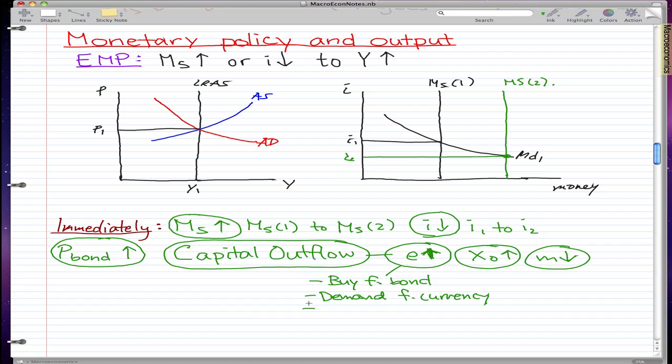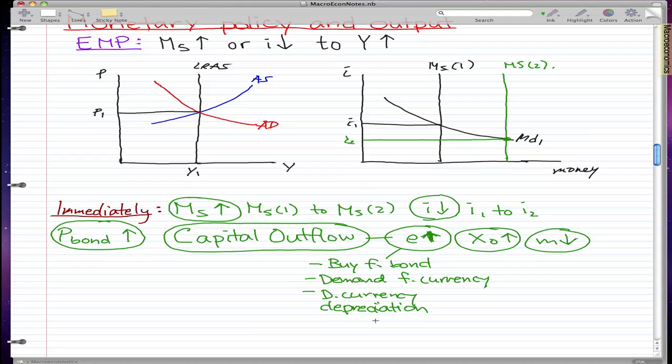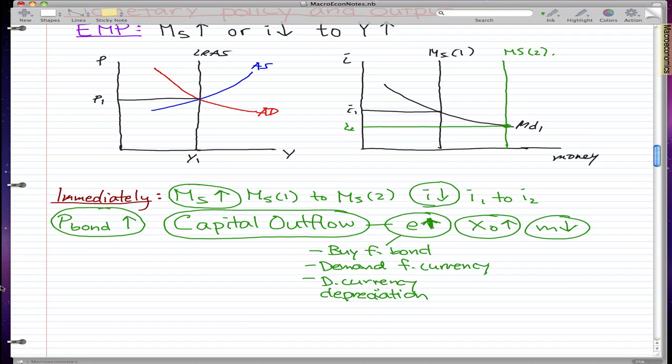When we demand foreign currency, we're pretty much selling out our own domestic currency, saying that we give you more of our currency in order to have like one unit of the foreign currency. So that's what causes the currency depreciation. Our domestic currency depreciates because we want the foreign currency more than we do our own currency. We need the foreign currency to buy the bonds, and this causes the currency depreciation. Now we have a lower exchange rate.